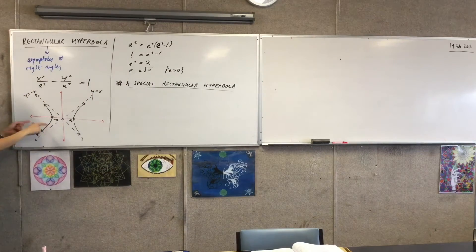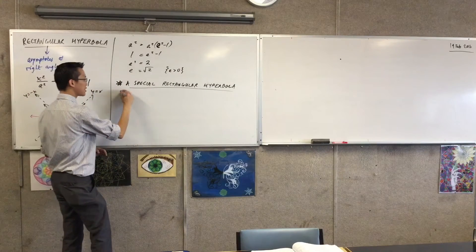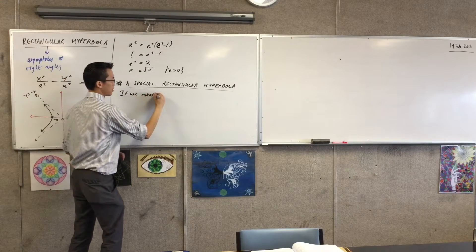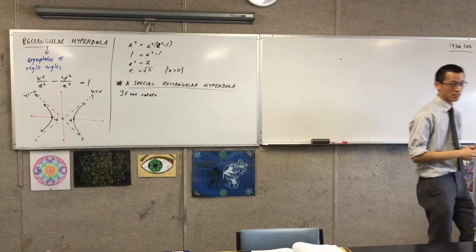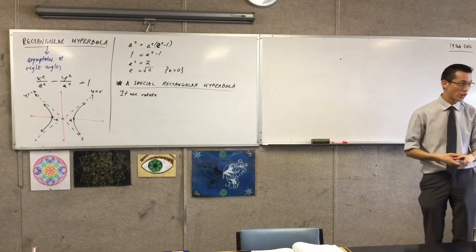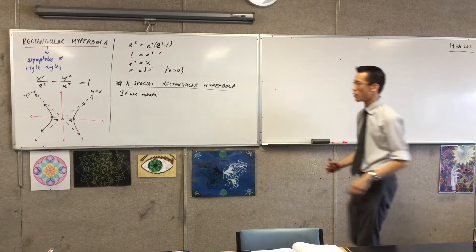So if we take this guy, if we rotate, now this time, because I'm now dealing with the rectangular hyperbola, I'm going to stop saying x squared on a squared minus y squared on a squared. I'm just going to cart that a squared over the other side.